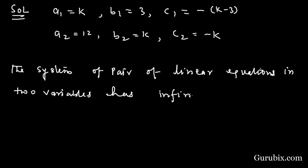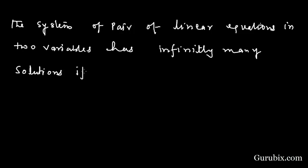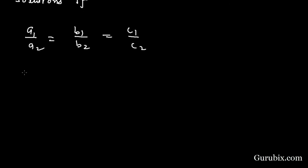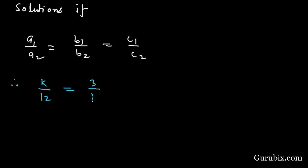We know that a system of pair of linear equations in two variables has infinitely many solutions if a1/a2 = b1/b2 = c1/c2. This means we have k/12 = 3/k = -(k - 3)/(-k).